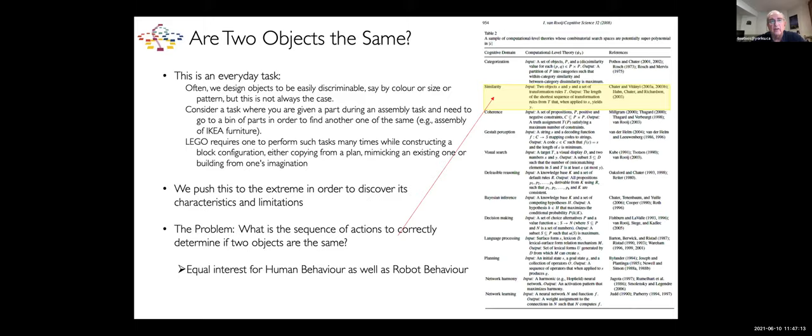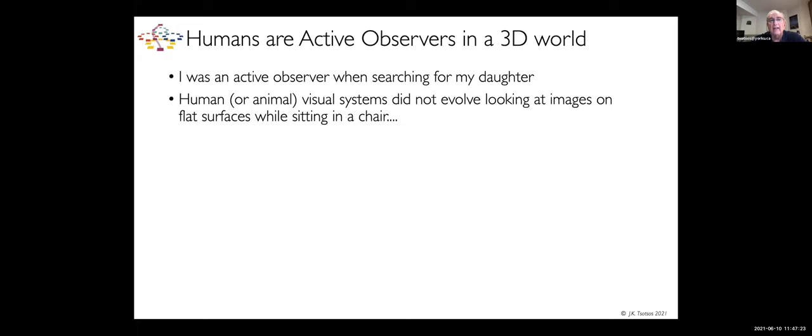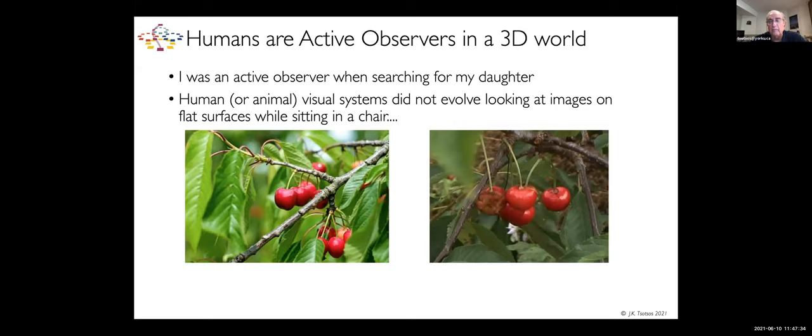When I was looking for my daughter, I was an active observer in the three-dimensional world. Human and animal systems did not evolve looking at images on flat surfaces while sitting in a chair. If you found a nice red cherry to pick, you're not going to eat it until you look at the reverse side. This is not a well-studied problem, so we set up our own experimental facility. We call it Pissau.